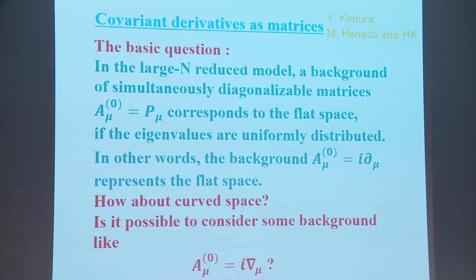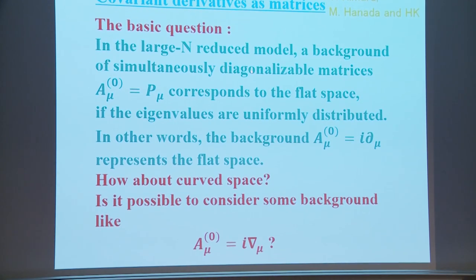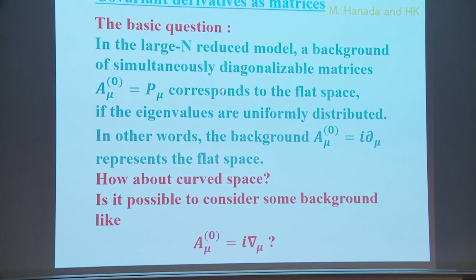The basic question is: in the large-N reduced model, a background of simultaneously diagonalizable matrices with uniformly distributed eigenvalues corresponds to flat space. In other words, the background A_μ^(0) = i∂_μ represents the flat space. How about curved space? Is it possible to consider a background A_μ = i∇_μ, where ∇_μ is a covariant derivative?